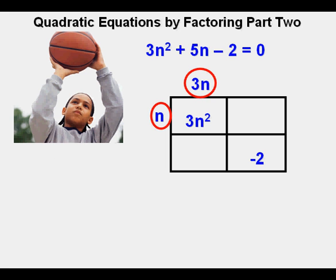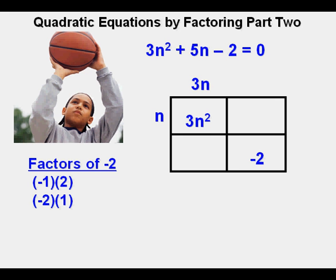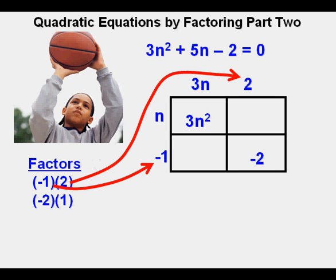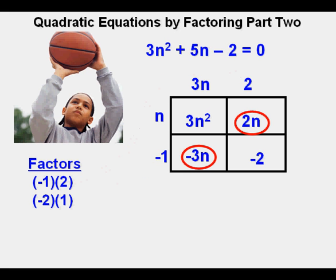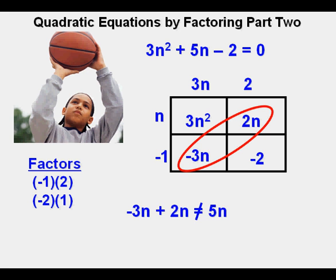Next, he looks for factors of the numeric term, negative 2, and lists them: negative 1 and 2, and also negative 2 and 1. He first puts negative 1 on the side and 2 on the top, then multiplies the terms on the side by the terms on the top to fill in the boxes. The lower left box is negative 1 times 3n, which equals negative 3n, and the upper right box is 2 times n, or 2n. Combining the two n terms, negative 3n plus 2n equals negative n. Since negative n does not equal 5n, he knows he needs to try another combination.